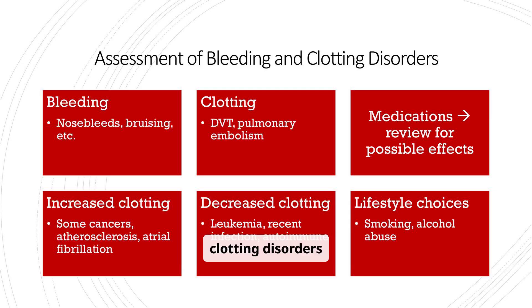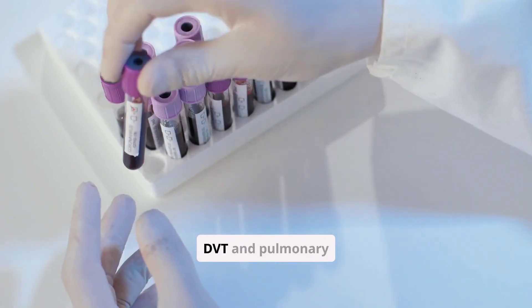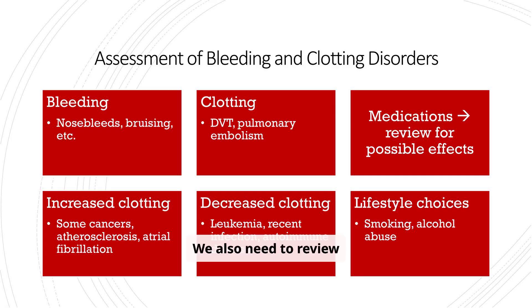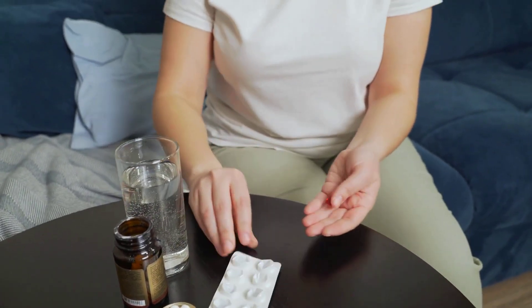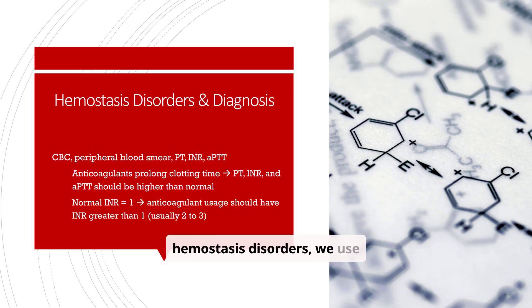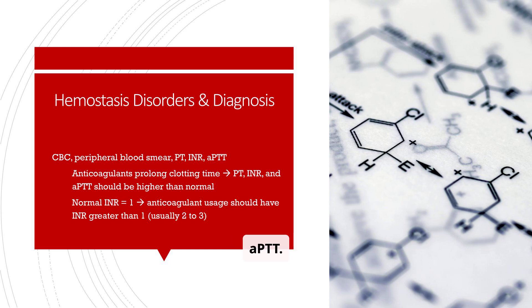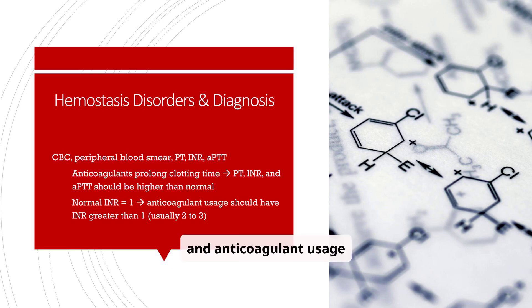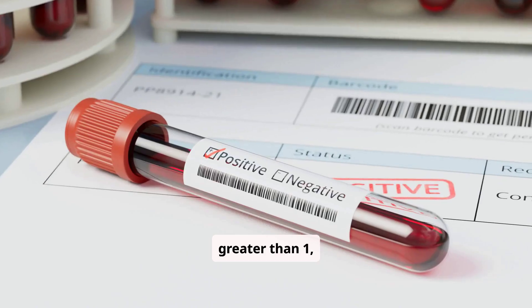Assessment of bleeding and clotting disorders involves considering several factors. We need to assess for bleeding, such as nosebleeds and bruising, and clotting, such as DVT and pulmonary embolism. We also need to review medications for possible effects and consider factors that increase or decrease clotting, as well as lifestyle choices like smoking and alcohol abuse. For diagnosing hemostasis disorders, we use tests like CBC, peripheral blood smear, PT, INR, and APTT. Anticoagulants prolong clotting time, leading to higher PT, INR, and APTT values than normal. A normal INR is 1, and anticoagulant usage should result in an INR greater than 1, typically between 2 and 3.